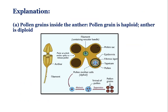Pollen grain is the male gametophyte — it bears the male gamete or microspore. Anthers are part of the androecium, the male reproductive structure. An anther has microsporangium within which microspores or pollen are present. The pollen sacs contain microsporocytes or microspore mother cells, which undergo meiosis to produce microspores or pollen.